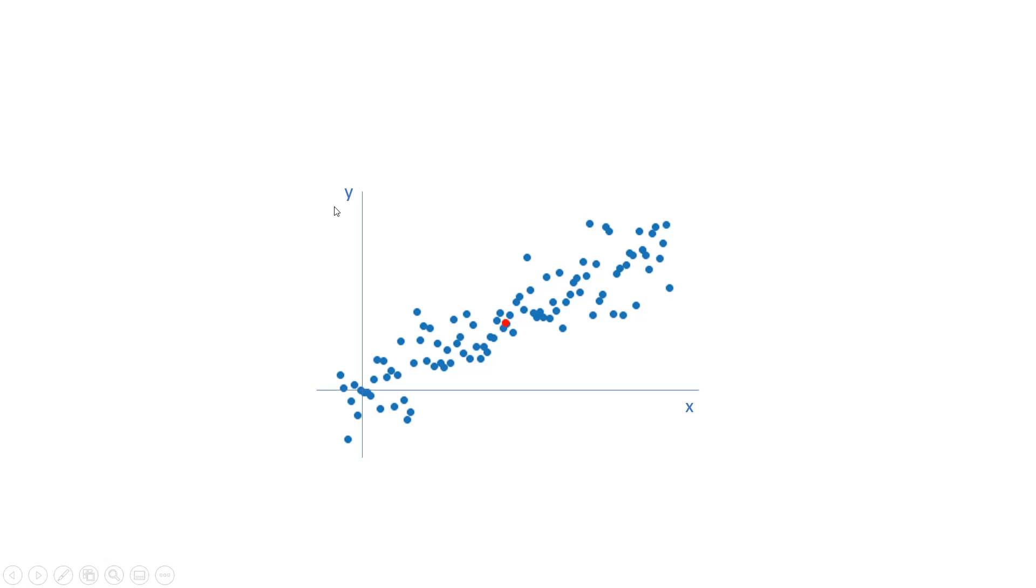Just like X, it is another feature in the data set. How to find this centroid? Well, it is just the mean value of all the X coordinates of all the data points and the mean value of all the Y coordinates of all the data points. And this is that coordinate X mean, Y mean.